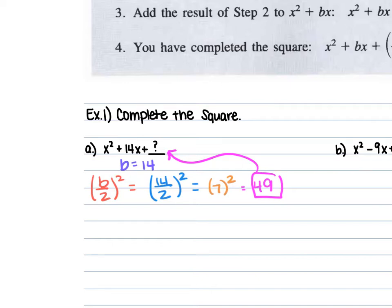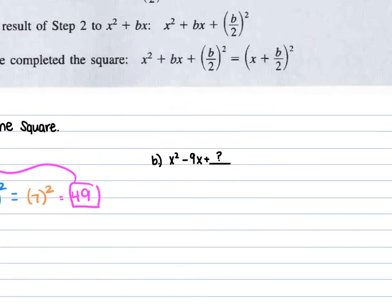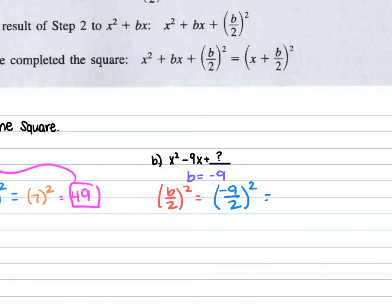Remember the form is ax squared plus bx plus c. For example b, our b is negative 9, so we use b over 2 squared to find our c term. This is negative 9 over 2 squared. Since negative 9 over 2 cannot simplify, we square both the top and bottom to give us 81 over 4. So 81 over 4 is that c term.